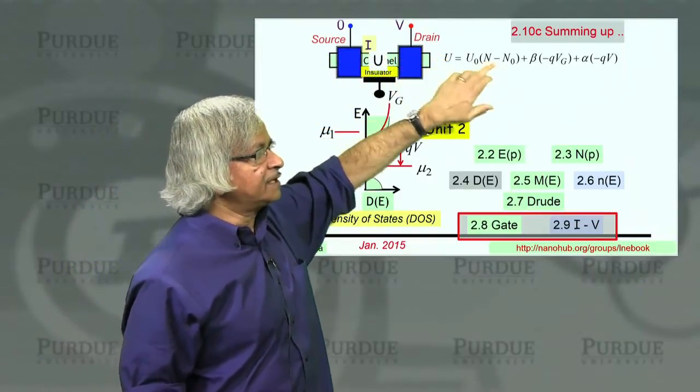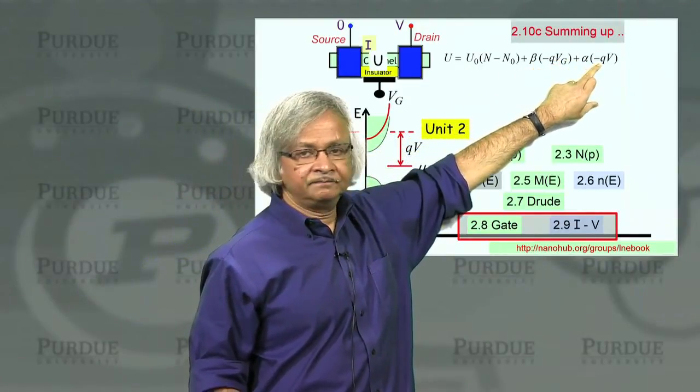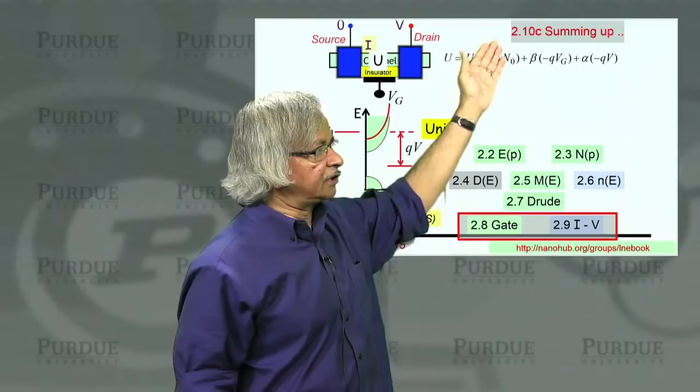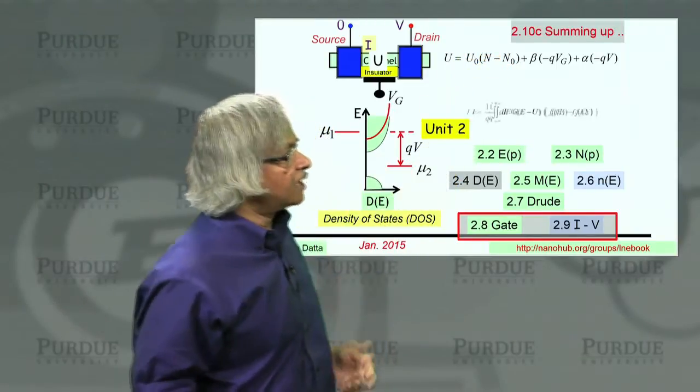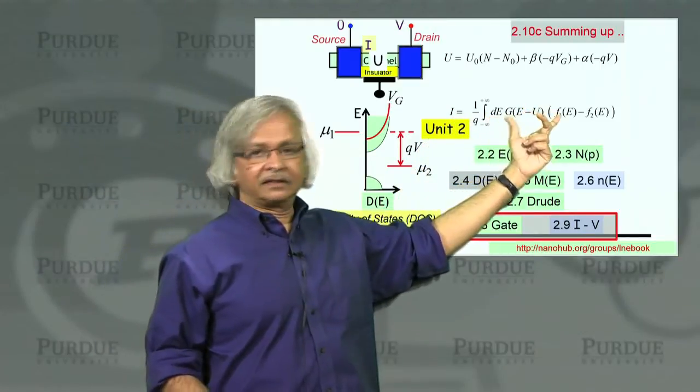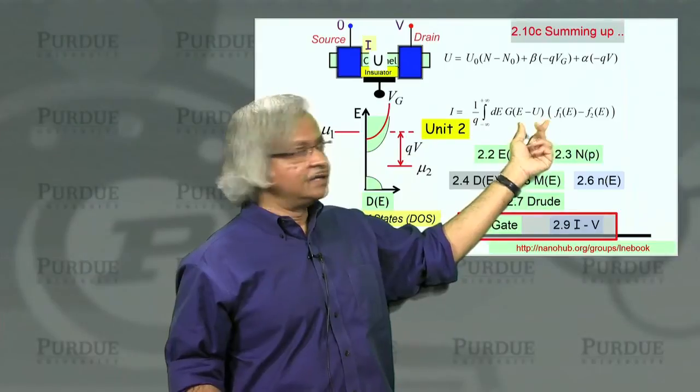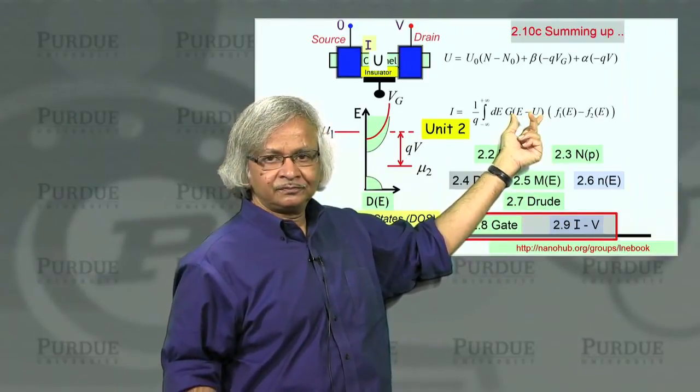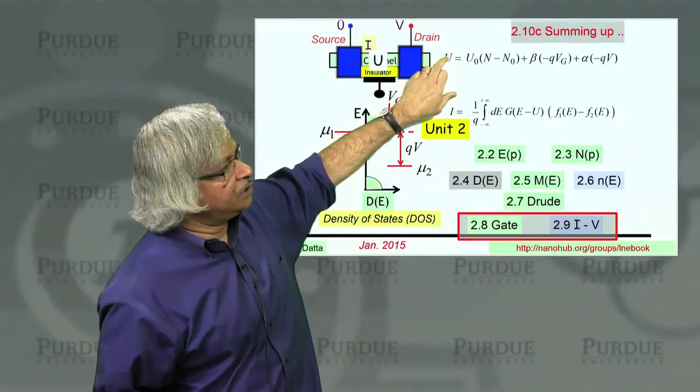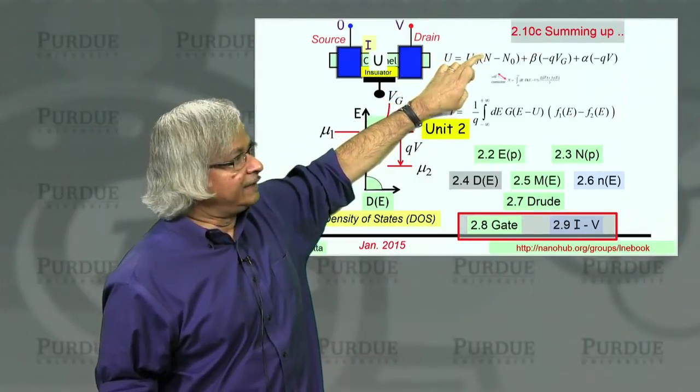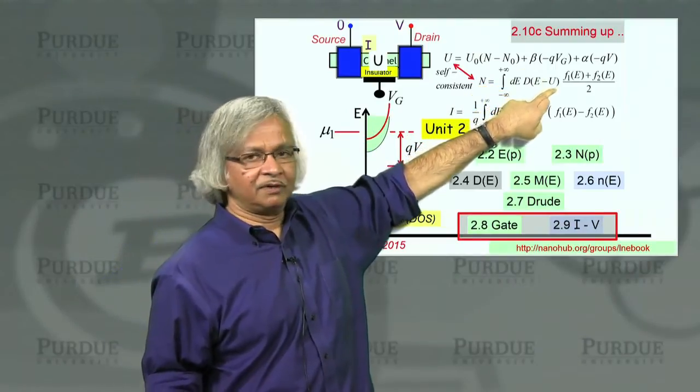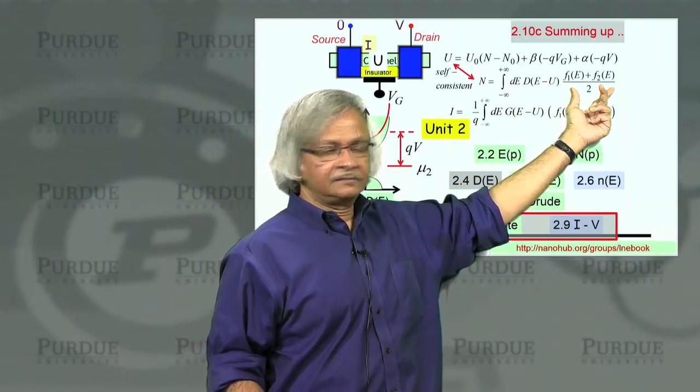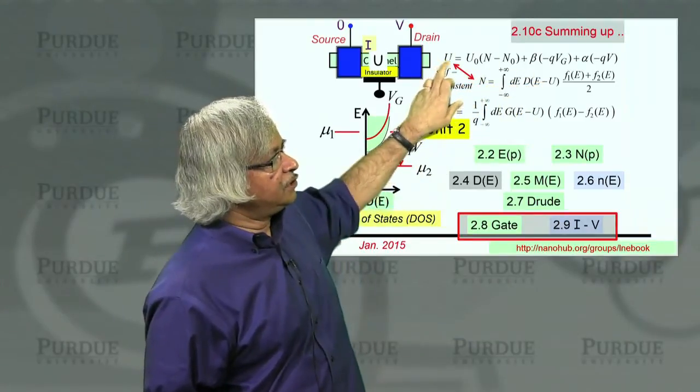And the way it is changed is the gate voltage controls the potential energy in the channel and moves it up and down. So that's this U, which depends on the potential on the gate, depends on the potential on the drain, and also depends on the change in the electron density inside the channel. That's this electron-electron charging, electron-electron interaction. And this U has to be included when you actually calculate the current. So far, our expression for current had g of E here. But now, you have to shift the conductance function also. It's E minus U. And how do you find this U? Well, this tells you what U is as a function of N.